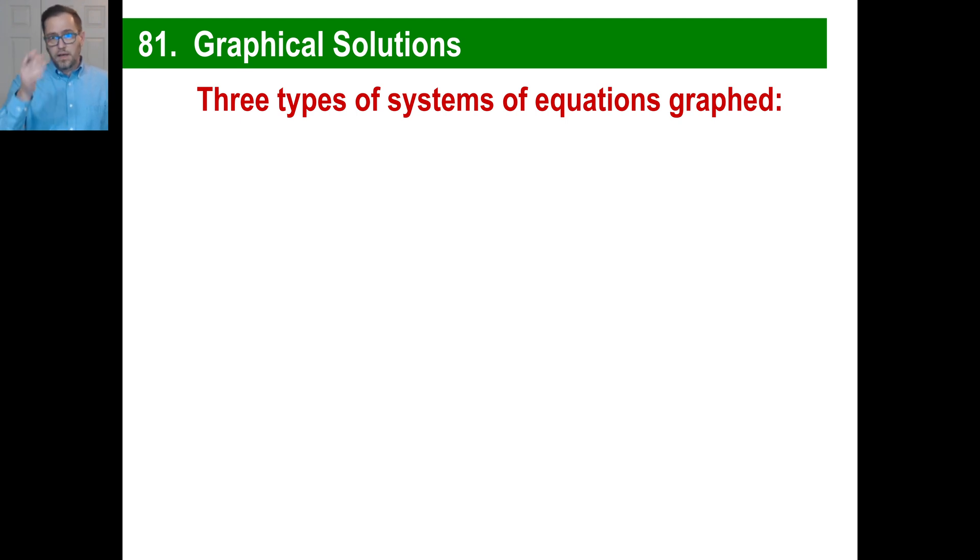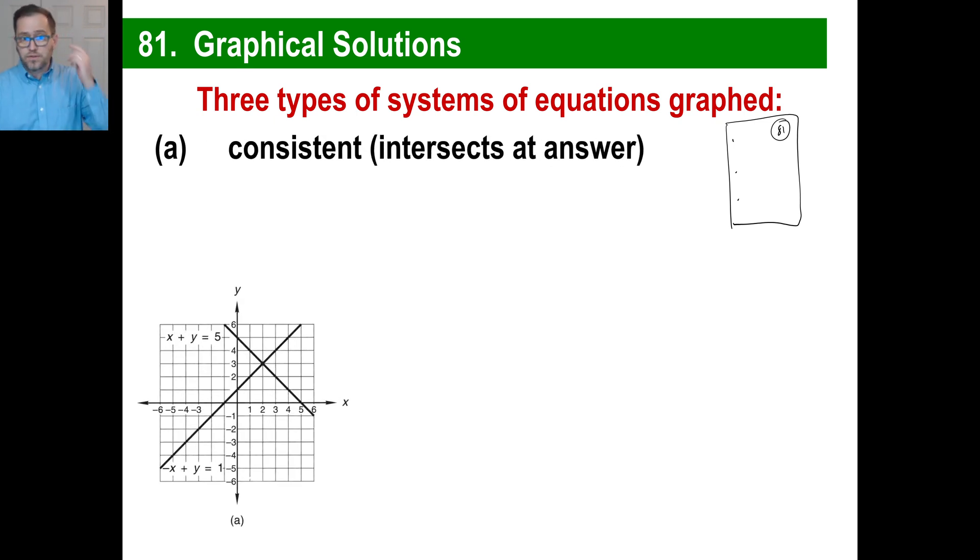In fact, let's go ahead and go to this. If you're doing this on your notes, there's your piece of paper, and you write 81 up top. If you run across these kinds of problems in the future, you can just go back to your notes or the book. But these are the three types of systems of equations that get graphed. The first term you should know is consistent, the first kind is consistent, which means it intersects at the answer, like the ones we've done so far.